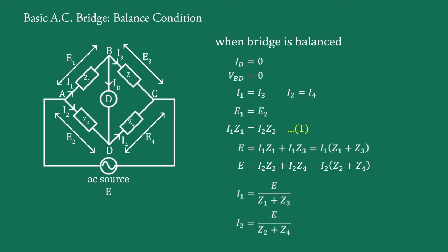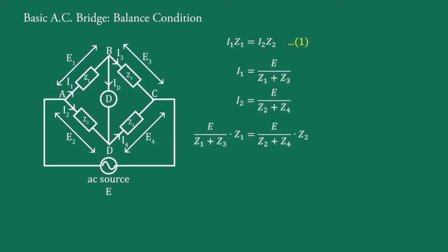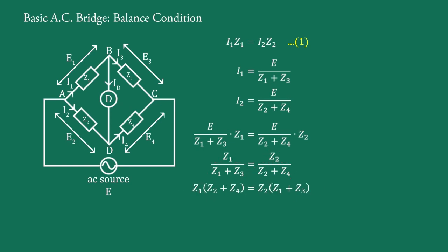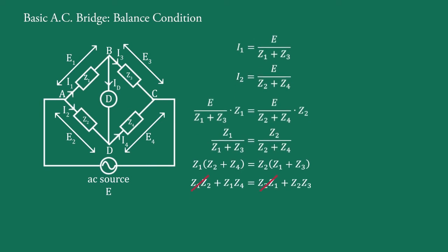Substituting these values into Equation 1, we get: [E / (Z1 + Z3)]·Z1 = [E / (Z2 + Z4)]·Z2. E cancels from both sides, so Z1 / (Z1 + Z3) = Z2 / (Z2 + Z4). Expanding the brackets: Z1·Z2 + Z1·Z4 = Z1·Z2 + Z2·Z3. The Z1·Z2 terms cancel from both sides, giving us Z1·Z4 = Z2·Z3. This is the general balance condition of the bridge.